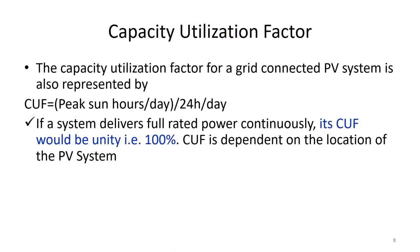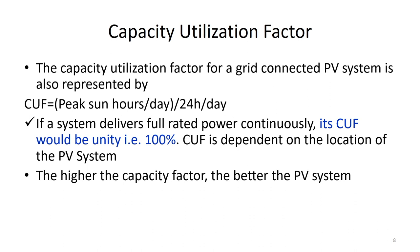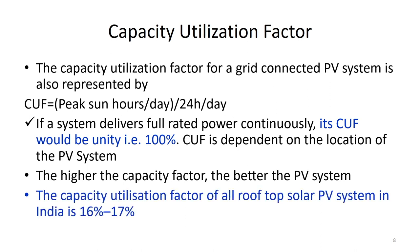The capacity utilization factor of a grid-connected PV system is also represented by peak sun hours per day divided by 24 hours per day. If a system delivers full rated power continuously, its CUF will be unity or 100 percent. The CUF is dependent on the location of the PV system — higher CUF means a better PV system. The CUF for rooftop solar PV systems in India varies from 16 to 17 percent, which is a low value.